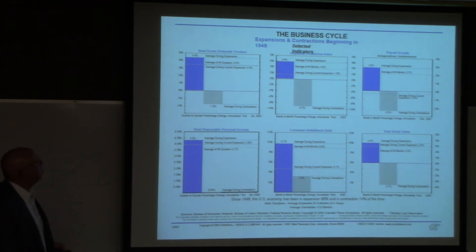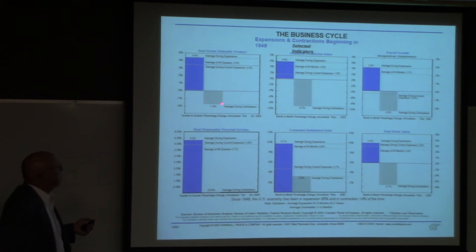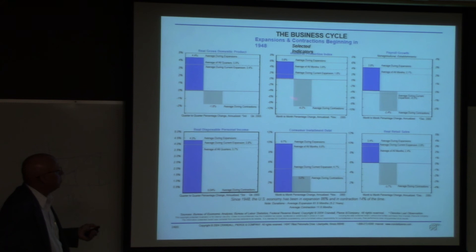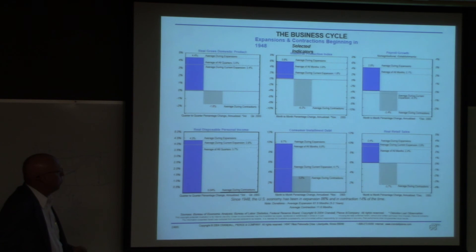You can see that GDP averages about 3.5% positive, and during a recession it averages about minus 2%. Looking at other indicators: industrial production is very volatile — it goes up about 6% during expansions and drops about 9% during recessions, making industrial-oriented companies very cyclical. Payrolls go up about 3% during expansions and drop about 3% during recessions. Retail sales are similar — about 3.5% up during expansions and about 3.5% down during recessions.